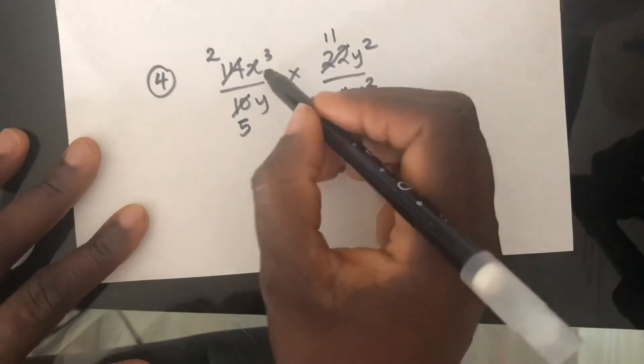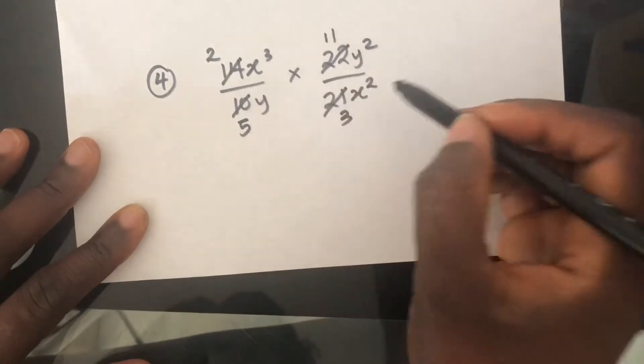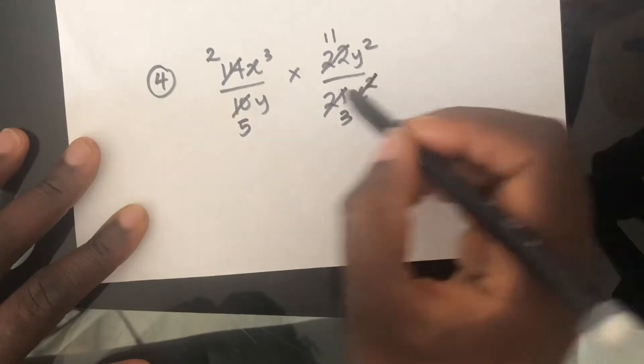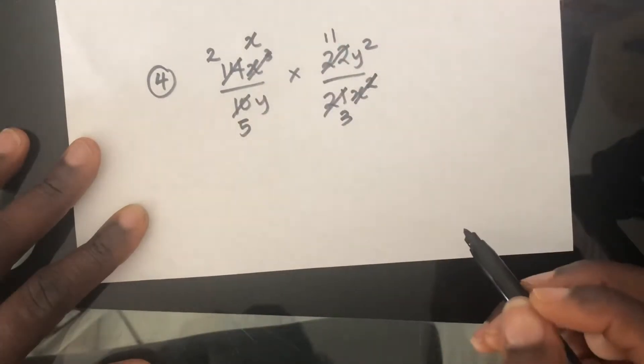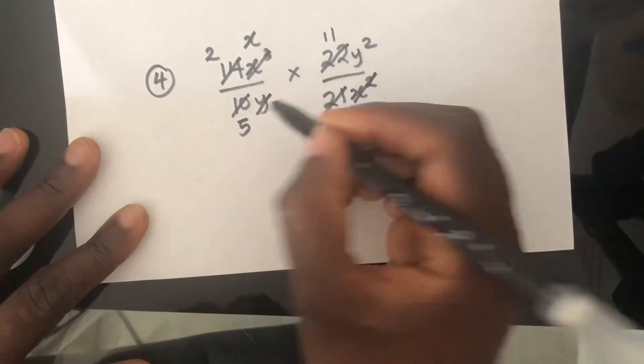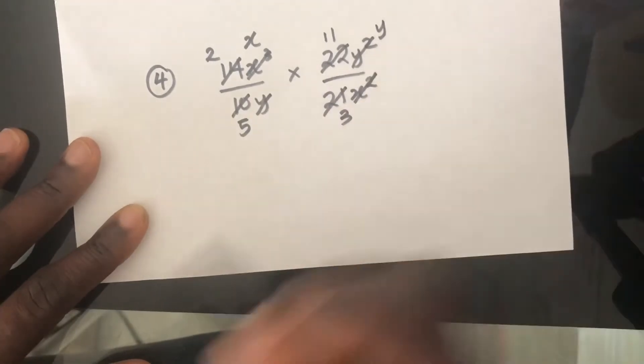We've got X cubed here and X squared here. So if we cancel, we will be left with 1X here. Y here and Y squared here, which will leave us with Y here.